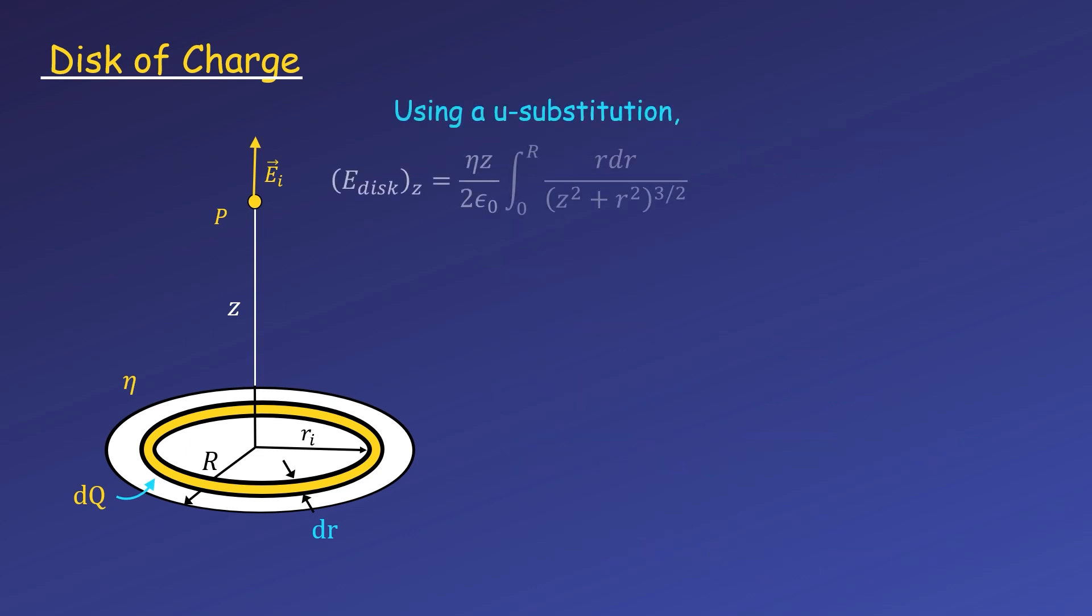This integral can easily be computed using a u substitution, where u equals z² plus r². The derivative of u with respect to r is 2r, and solving for r times dr, which is what we need to substitute for, we find that it's equal to du over 2.